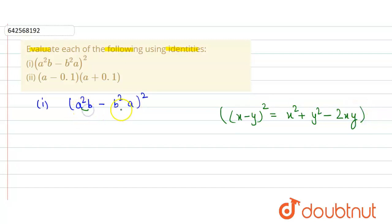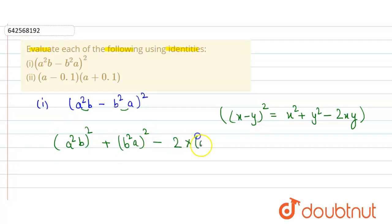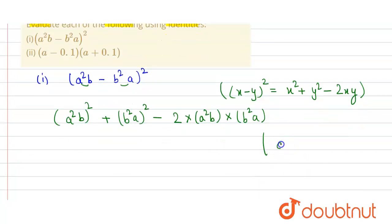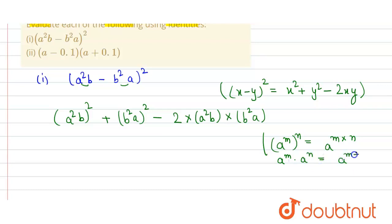Here, a²b is x and b²a is y. So we get (a²b)² + (b²a)² - 2·(a²b)·(b²a). We simplify using the exponent identity: a raised to power m raised to power n equals a raised to power m×n, and a^m · a^n = a^(m+n).